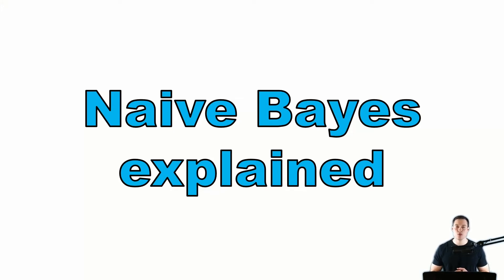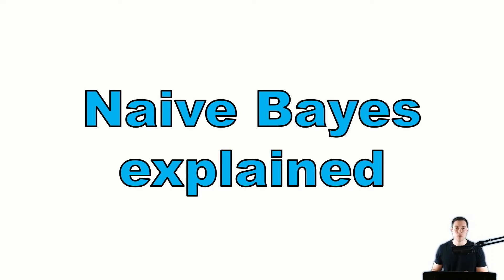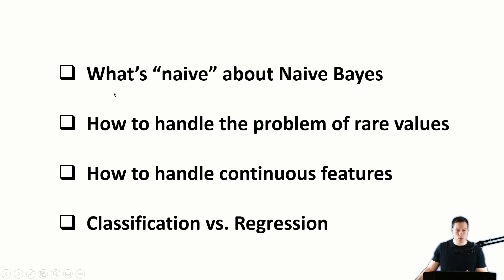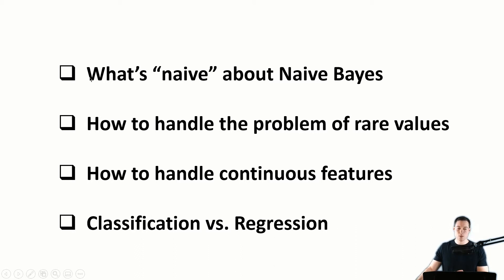Welcome to part 2 of the Naive Bayes Explained series. In the previous video we covered how the Naive Bayes algorithm works, and in this video we're going to cover some additional points about the algorithm: what's naive about Naive Bayes, how to handle the problem of rare values, how to handle continuous features, and lastly classification versus regression. So let's start with what's naive about Naive Bayes.